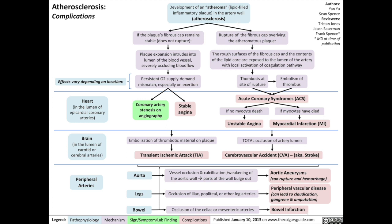Now back to the atheroma stage of atherosclerosis. If the fibrous cap overlying the atheromatous plaque were to rupture, the rough surfaces of the fibrous cap and the contents of the lipid core are then exposed to the lumen of the artery, with local activation of the coagulation pathway.